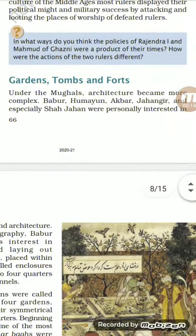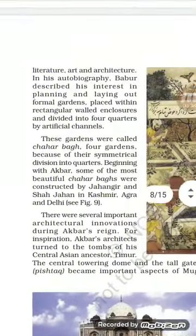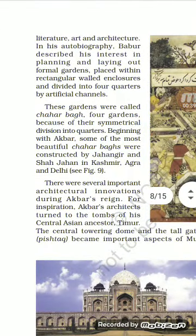Under the Mughals, architecture became more complex. Babar, Humayun, Akbar, Jahangir and especially Shah Jahan were personally interested in literature, art and architecture.